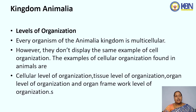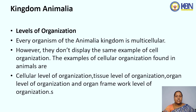Kingdom Animalia: level of organization. Every organism of the Animalia kingdom is multicellular. However, they don't display the same level of cell organization. The levels of cellular organization found in animals are: cellular level, tissue level, organ level, and organ system level of organization.